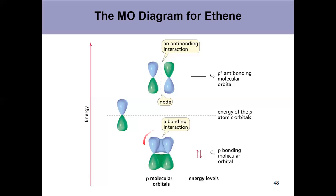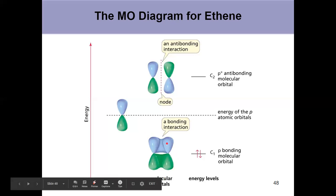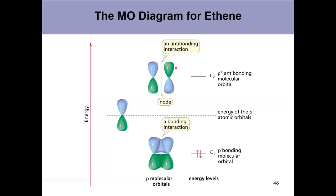We can think about them again coming together in phase, which is a bonding interaction, or out of phase, which is an anti-bonding interaction. And when they're out of phase, there's a node between the two of them.